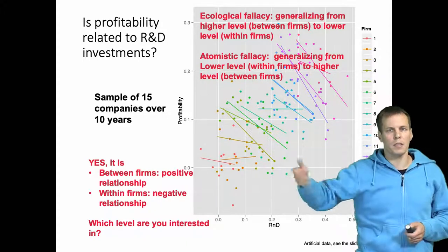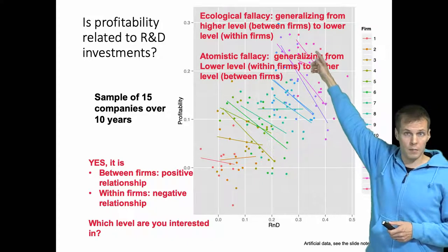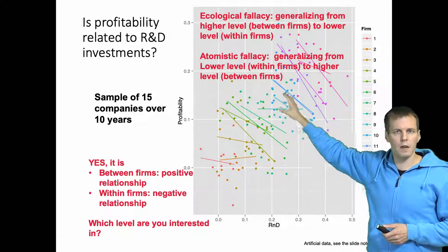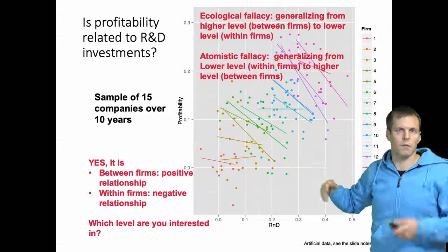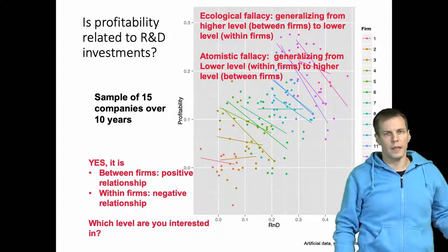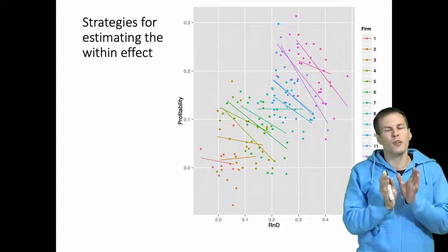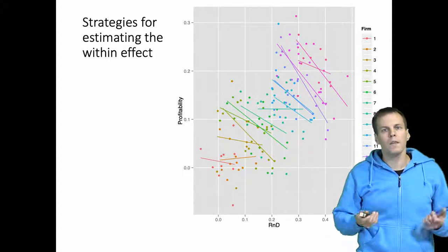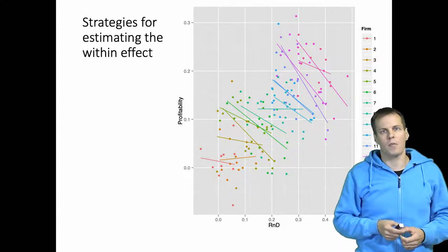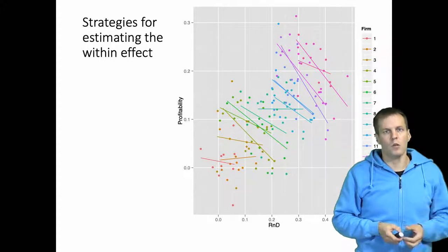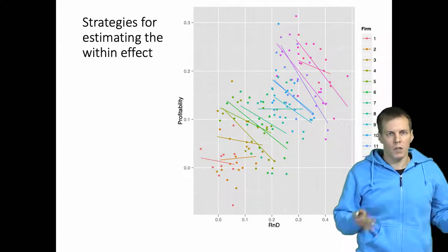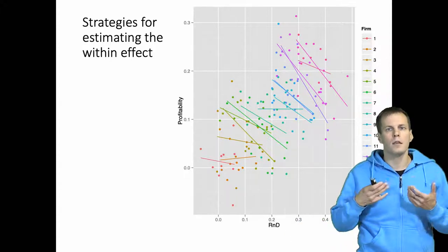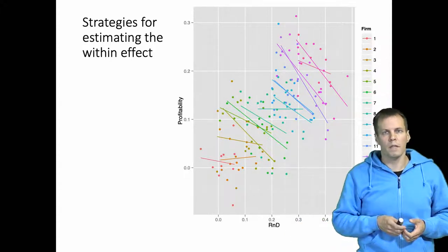So when a company increases their R&D investment, profitability will go down. The between effect is positive and the within effect is negative, and we want to understand how to estimate the within effect from this data — to take these two effects apart. The within effect would be important for informed policy on a firm level: should a firm increase or decrease their R&D investments if they care about profitability? That is the question the within effect would answer.